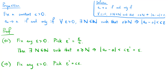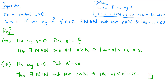Conversely, we fix any epsilon greater than zero and pick epsilon prime which equals c times epsilon. Then there exists a natural number N such that little n greater than or equal to N implies that the absolute value of an minus a is less than epsilon prime, which equals c times epsilon. And this completes the proof.